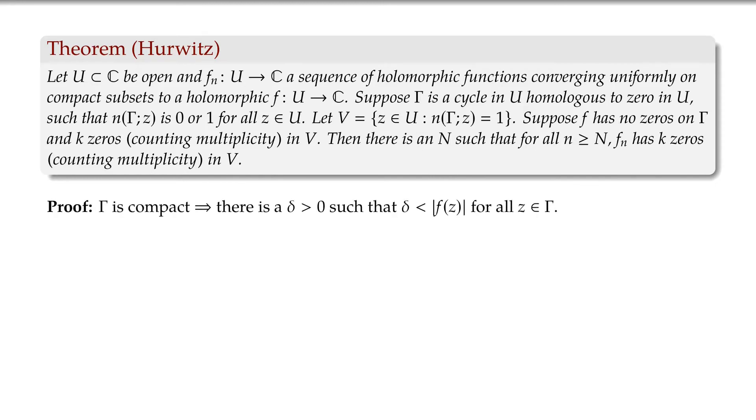All right, so let's look at the proof. Gamma is compact. And F has no zeros on gamma. So therefore, there is a positive lower bound. There is some delta, which is strictly less than all the values of F on gamma, but it's still positive.